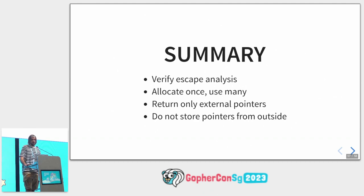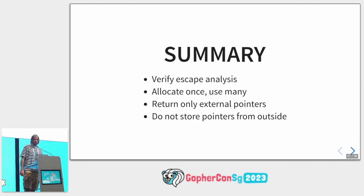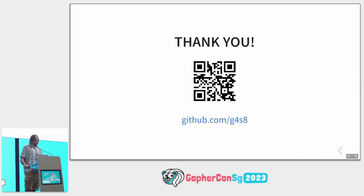So the summary is: first, verify the escape analysis output — because sometimes it could be wrong. Think of it just as a hint that I need to prove that the escape really happens there. Then I use the rule: allocate once and use many times if needed. Return only external pointers, method receivers, or parameters. And don't store pointers from outside in my field structure. So that's all. Thank you.